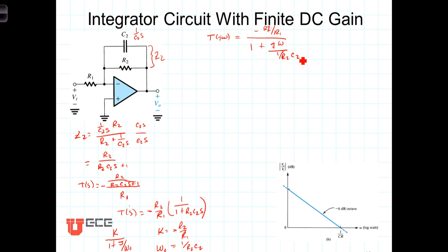And we're interested in of course the magnitude of that frequency response or that transfer function. And that is going to equal the magnitude in the numerator is R2 over R1, and the magnitude of the denominator of course will be the square root of 1 squared plus omega over 1 over R2 C2 quantity squared.